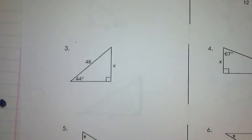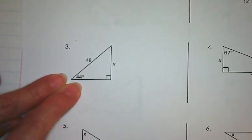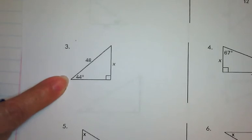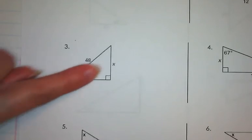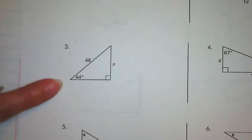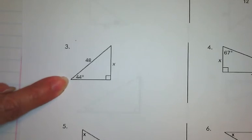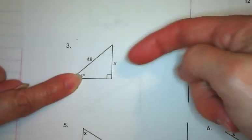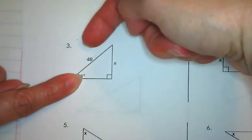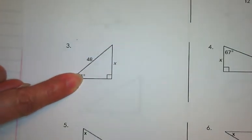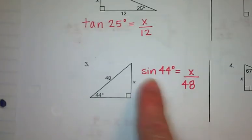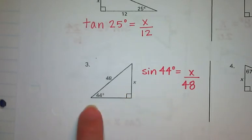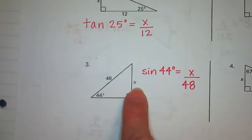Number 3: this angle is 44 degrees, the hypotenuse is 48, and we are looking for the opposite side. The trig function that relates the angle to the opposite side and hypotenuse is sine. Therefore, the answer to number 3 is that the sine of 44 degrees equals x over 48.